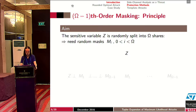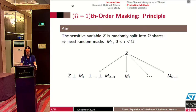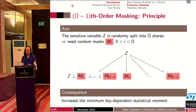As a consequence, some countermeasures have been developed. One of the most classical countermeasures is the masking scheme, as its security can be formally grounded. The rationale of an (ω−1)-order masking scheme is as follows: any sensitive variable will be randomly split over ω shares using ω−1 random variables called masks. The impact of this countermeasure is to make the first ω−1 order moments independent from the key. As a consequence, if an attacker wants to attack such a scheme, they should at least look at the ω-th moment.